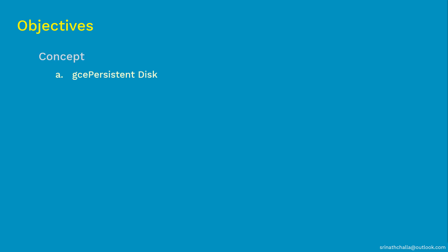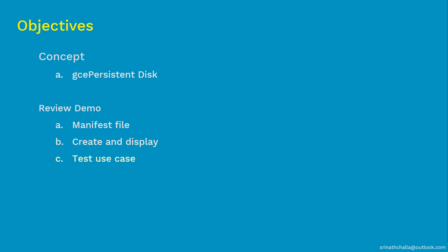This presentation is divided into two parts. In part one, we will discuss what is GCE persistent disk and why it is used. After that, we will review the GCE persistent disk demo we are able to perform on a live Kubernetes cluster. In the review demo, I'll show you what goes inside the pod with a GCE persistent disk volume type in a manifest file. Then we'll create and display that, test the use case to validate it is working as expected, and finally clean up what we have created. Now let's get started discussing what is GCE persistent disk and its main purpose.